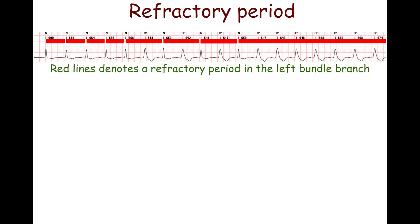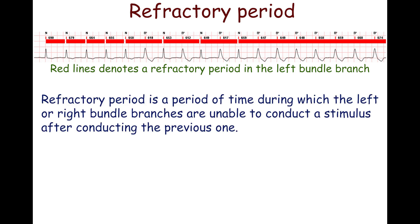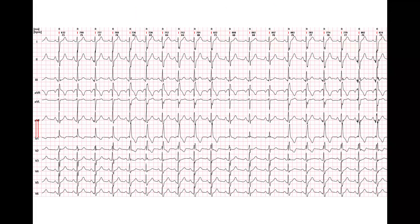A refractory period is the time during which a cardiac cell cannot respond to a stimulus. In this context, the refractory period refers to the time during which the left or right bundle branches are unable to conduct a stimulus after conducting the previous one. Sometimes, different degrees of impulse conduction may be observed.